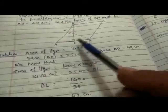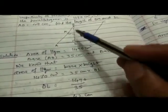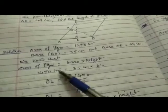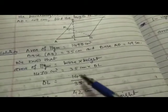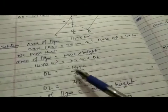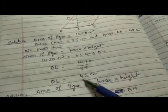Base AB ko haam lele 35, this ki corresponding height hai DL, into DL. So from this equation the value of DL is 1470 upon 35. Cancel karenge 35 se 1470, it is 42. Therefore DL equals 42 centimeter.